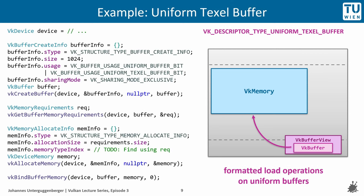In code, this looks as follows. First, in a VkBufferCreateInfo struct, we specify the intended size of our buffer — no big chunk of data is allocated with a VkBuffer, just the size is stated. Then all intended usage types are stated, in this case UniformBuffer and UniformTexelBuffer usage. Sharing mode exclusive means that the buffer is intended to be used with one queue family type only, and finally the vkCreateBuffer function creates the VkBuffer handle.